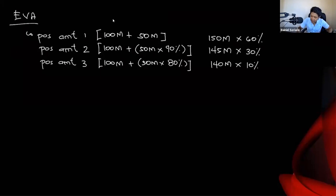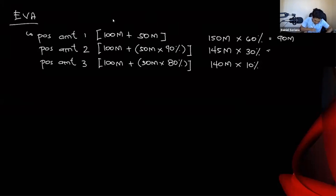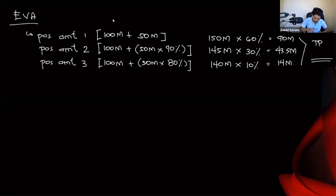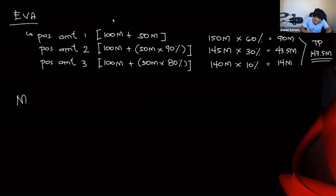Under the expected value approach: 150 million × 60% = 90 million; 145 million × 30% = 43.5 million; 140 million × 10% = 14 million. The transaction price equals 90 + 43.5 + 14 = 147.5 million pesos. Requirement A answer: 147.5 million pesos.